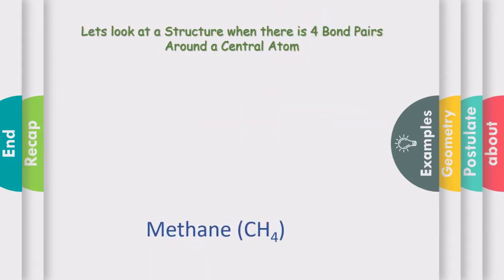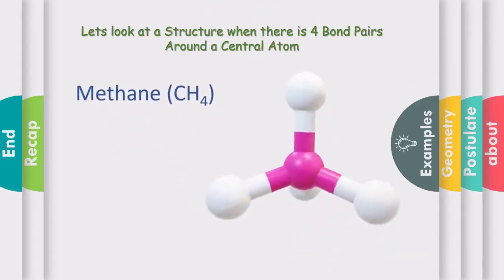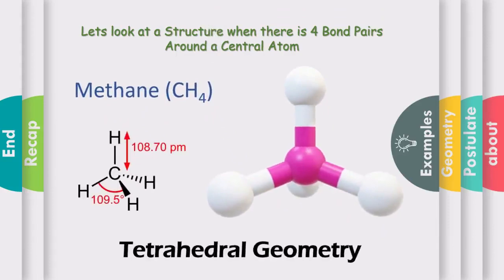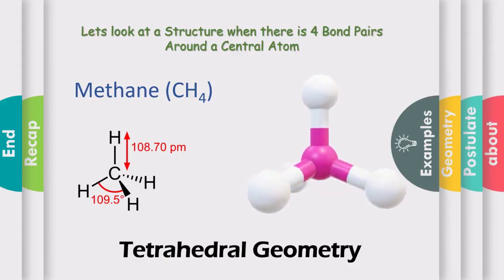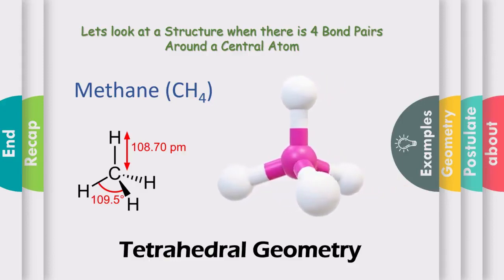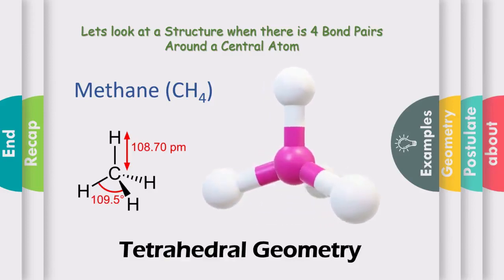What happens when there are four things present around a central atom, whether bond pairs or lone pairs? Let's look at the structure of methane. The central atom is surrounded by four hydrogen bond pairs. To minimize the repulsion between them, they keep at an angle of 109.5 degrees in three dimensions. As a result, the atoms cannot remain in the same plane, forming a geometry called tetrahedral geometry in three dimensions.